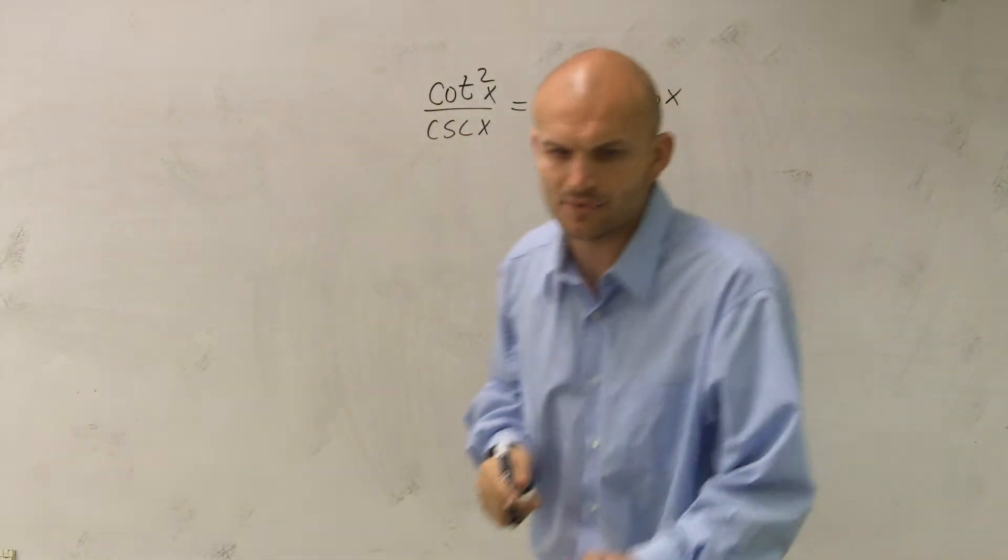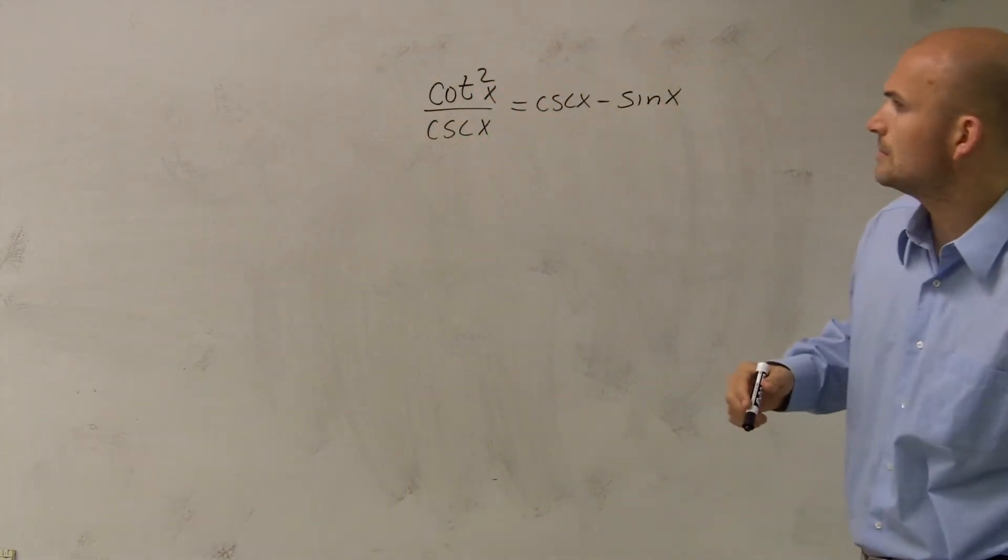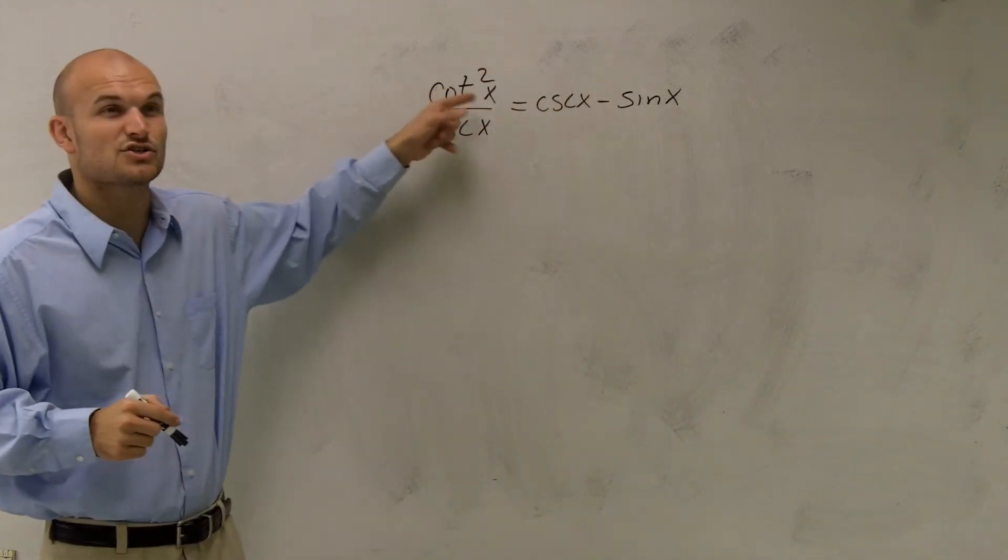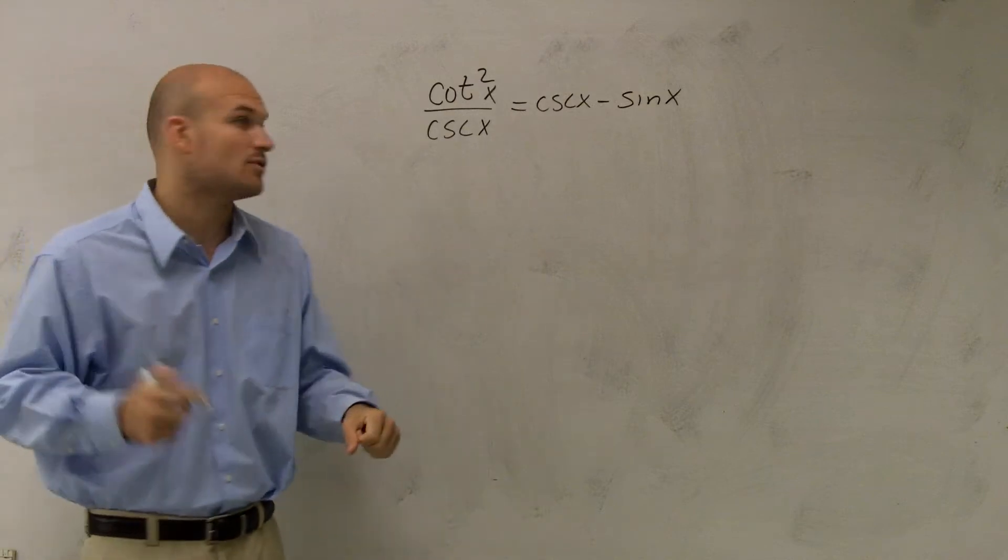Because when I'm looking for, when I have this, actually, let's go and write cotangent squared. Since I know cotangent squared is going to give me cosecant squared minus 1, right?